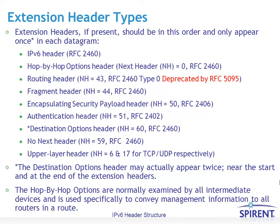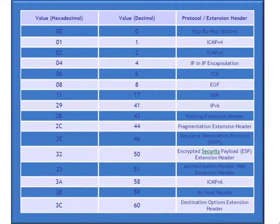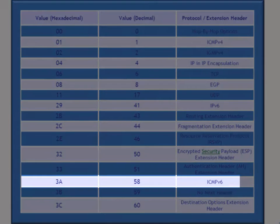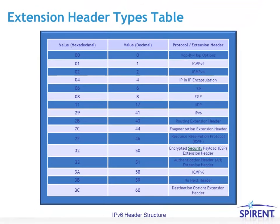The hop-by-hop options are normally examined by all intermediate devices and are used to specifically convey management information to all routers within the route. The extension header types are also shown in a table format in both hexadecimal and decimal values. One important value to recognize with IPv6 is next header value decimal 58, which is for ICMPv6 — Internet Control Message Protocol version 6 — which is used for a lot of processes with IPv6, as we'll find out in a different topic in this course.